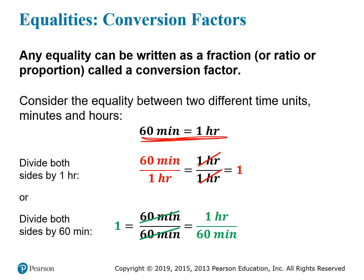If you divide both sides by 1 hour, on the left-hand side you get 60 minutes divided by 1 hour, and on the right-hand side you get 1 over 1, which is obviously 1, but the unit also cancels out. So on the right-hand side, this is equal to just 1 with no unit. If you divide both sides by 60 minutes, then you get the opposite situation. The right-hand side becomes 1 hour divided by 60 minutes, and the left-hand side, once you divide everything and cancel the unit, becomes just 1.